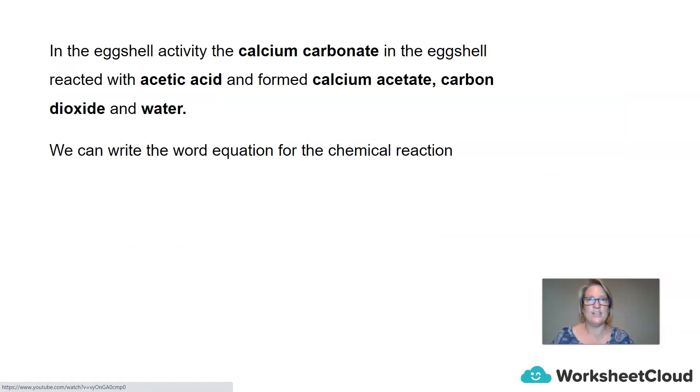So in the egg shell activity, the egg shell is made up of calcium carbonate and the egg shell reacted with the vinegar, and vinegar is known as acetic acid, and that formed calcium acetate, carbon dioxide, and water. So looking at this description I wonder if you are able to work out what the little bubbles were that were on the surface of the egg shell.